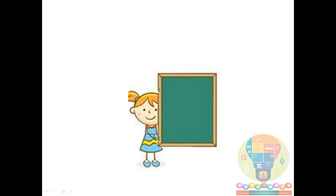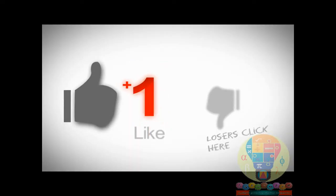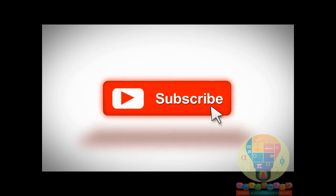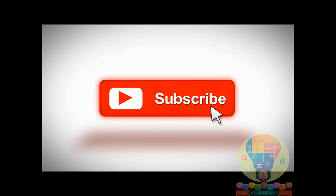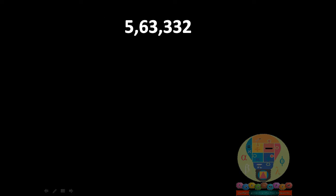Today we are going to learn about the divisibility rule of 11. Please like our channel, subscribe, and click on the bell icon for notifications. The rule is: if the difference between the sum of odd-place digits and even-place digits is 0 or divisible by 11, then the given number is divisible by 11. Let's have some examples.